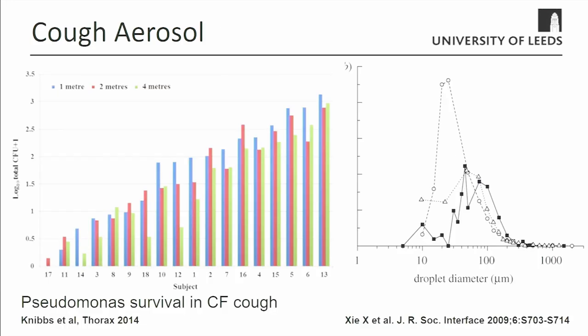To give you some idea of sizes we're interested in: this is data from papers around cough aerosol. There's not that much data measuring cough aerosol from people with infections, but a lot from healthy volunteers. Typically, people produce droplets between about 200 and 300 microns. They will very rapidly evaporate, leaving much smaller things in the air. There are studies that have shown that people with particular pathogens — this one is pseudomonas in people with cystic fibrosis — can be aerosolized in a cough, sampled from a cough, and found up to four meters away, making it a potential transmission route.